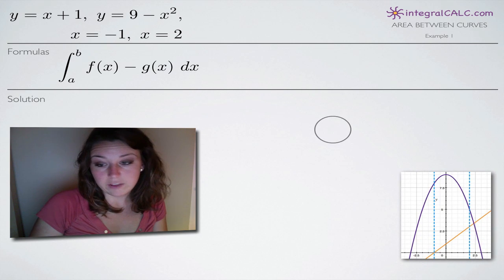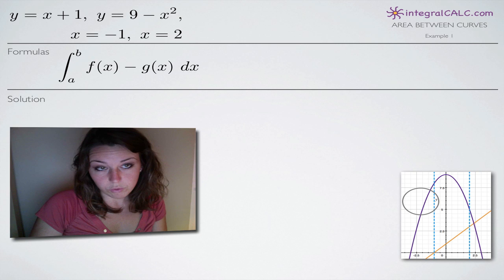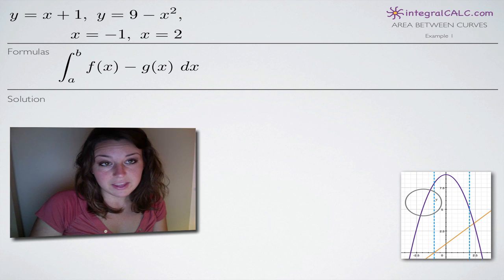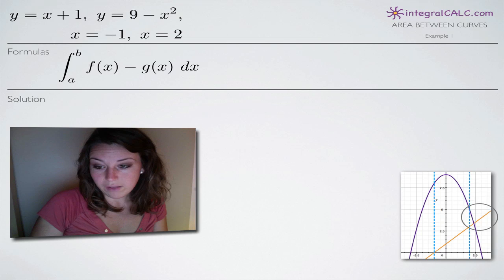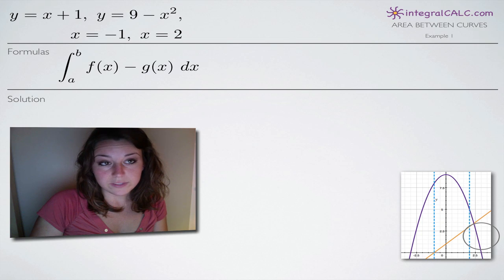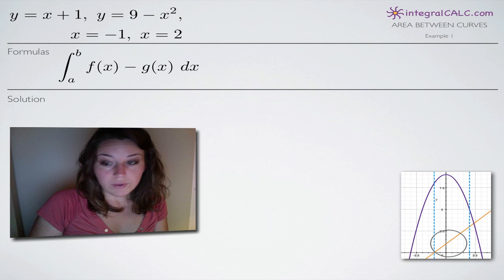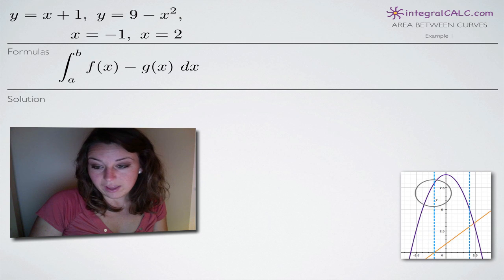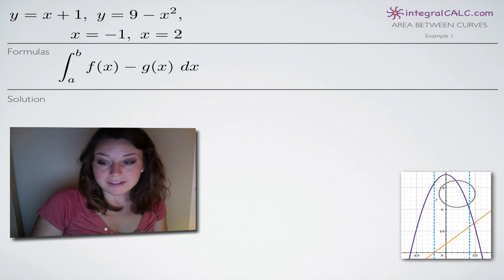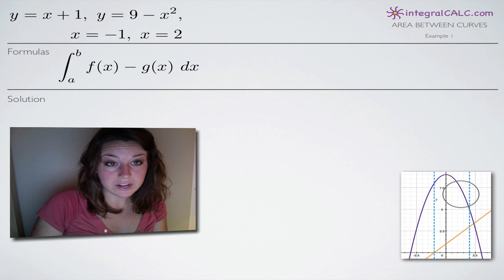So one way we can do that is by graphing the functions. You can see that y equals 9 minus x squared is the purple graph here and y equals x plus 1 is the orange graph. If we graph them and then we have here the line x equals negative 1 and the line x equals 2, you can see that 9 minus x squared is above x plus 1 on the range negative 1 to 2.